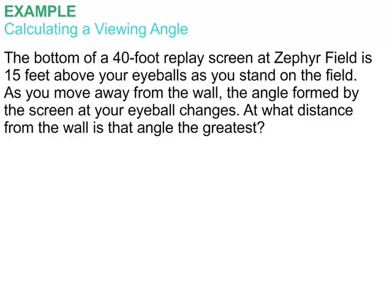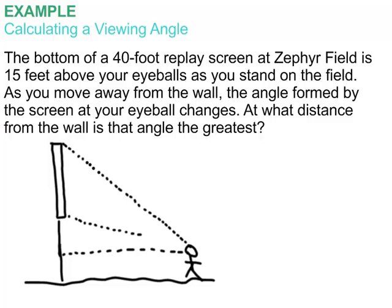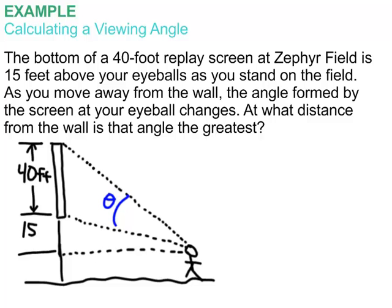I'm going to draw a picture very similar to what we just saw in the GeoGebra model. Here's a screen with some vertical distance, and here are the eyeballs. The viewing angle is established by the ray from the top of the screen to the eyeball and the ray from the bottom of the screen to the eyeball. Let's call that angle theta. Our screen was 40 feet tall and 15 feet above the eyeballs.